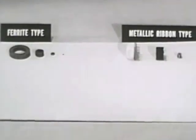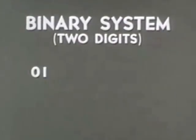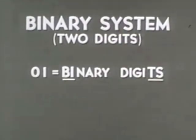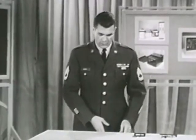Both types of magnetic cores are remarkably adaptable to the language of data processing. Many ADP systems use the binary system of numbering, which employs just two digits: zero and one. These two digits are called binary digits, or bits for short. A bit is either a zero or a one, nothing else. We use binary because a bit can be represented by any bistable device, and a magnetic core is a bistable device.